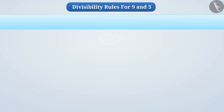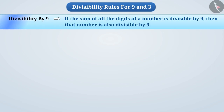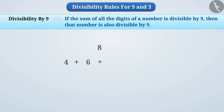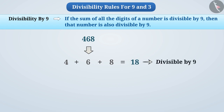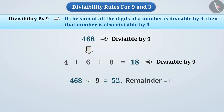Similarly, the rule for divisibility by 9 tells us that if the sum of all the digits of a number is divisible by 9, then that number is also divisible by 9. For example, the sum of digits 4, 6 and 8 in the number 468 is 18, and 18 is divisible by 9. So, 468 is also divisible by 9. To verify this, we divide 468 by 9. We find that by division, we get quotient 52 and remainder 0. Since the remainder is 0, we can say that 468 is divisible by 9.